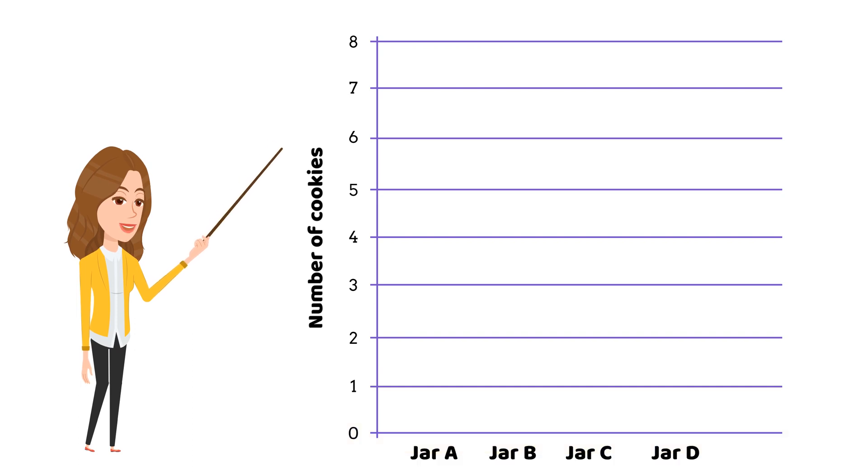Let us now create our bar graph together. I'll start with Jar A. Jar A has two cookies. So, I'll draw a bar above Jar A, and it will reach up to the number two on the vertical axis. There you have it. We just represented the number of cookies in Jar A.